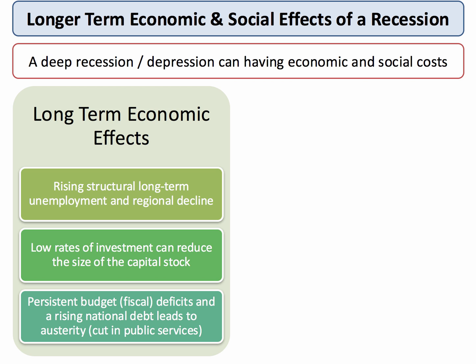If the recession leads to a significant reduction in capital investment — indeed, if gross investment falls below that needed just to replace depreciating or technologically obsolete capital — then a country's capital stock may actually fall and shrink. In theory, that can lead to an inward shift of the production possibility frontier. If governments are running heavy deficits and national debt is rising, depending on the political and economic theories of the government in power, it can lead to austerity involving cuts in public services. In Greece's case, austerity was imposed by the Troika — the IMF, ECB, and European Commission — as part of emergency financial support.